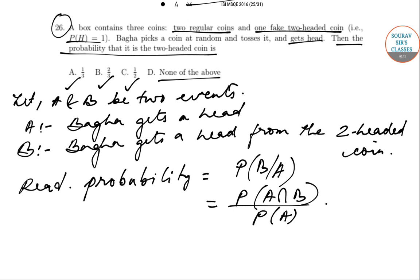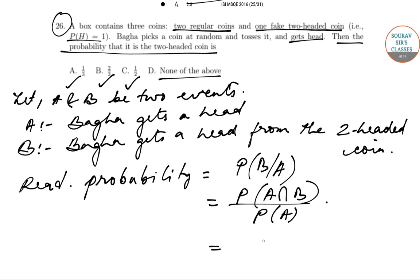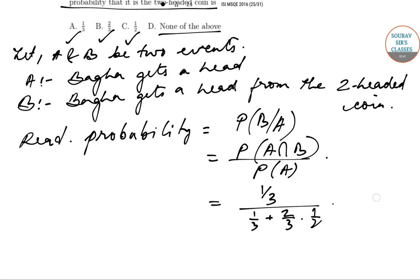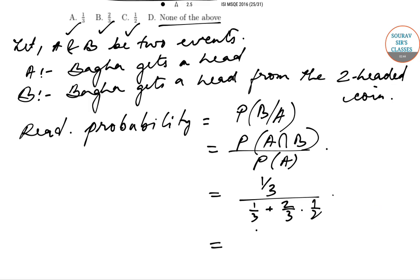P(A ∩ B) is the probability that Baghav gets a head and it comes from the two-headed coin — that is 1 out of 3 cases, so P(A ∩ B) = 1/3. P(A), the probability of getting a head overall, equals 1/3 plus (2/3 × 1/2). This simplifies to P(B|A) = (1/3) / (2/3) = 1/2, which corresponds to option C.